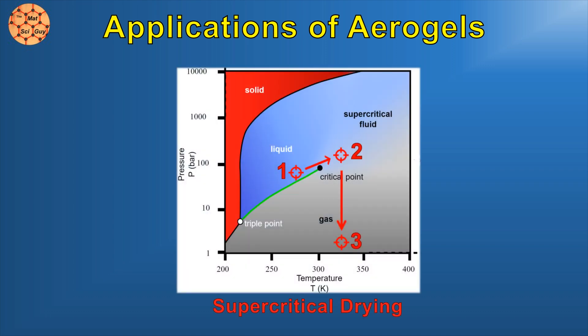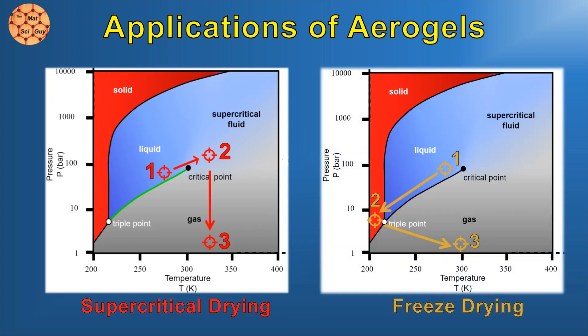The supercritical drying process that we discussed earlier still generally produces the best silica aerogels, but for carbon variants, freeze drying is a viable alternative.